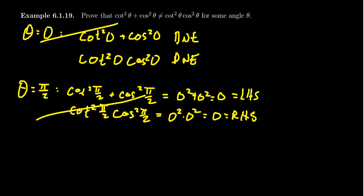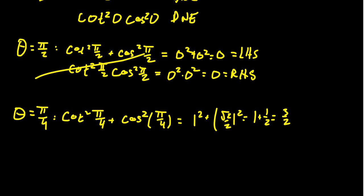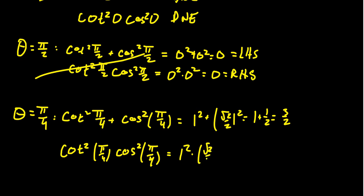We need to find where they disagree. Let's try pi over 4. On the left-hand side, you get cotangent squared of pi/4 plus cosine squared of pi/4. Cotangent at pi/4 is 1 — because cosine and sine are both root 2 over 2, so the ratio is 1. So you get 1 squared plus (root 2 over 2) squared, which gives 1 plus 1/2, equal to 3/2. On the right-hand side, cotangent squared of pi/4 times cosine squared of pi/4 gives 1 squared times (root 2 over 2) squared, which is 1 times 1/2, equal to 1/2.